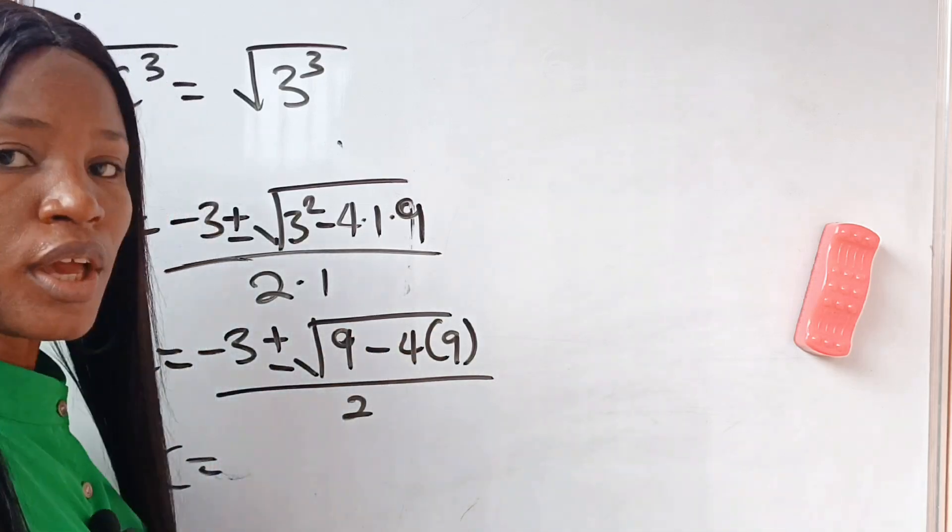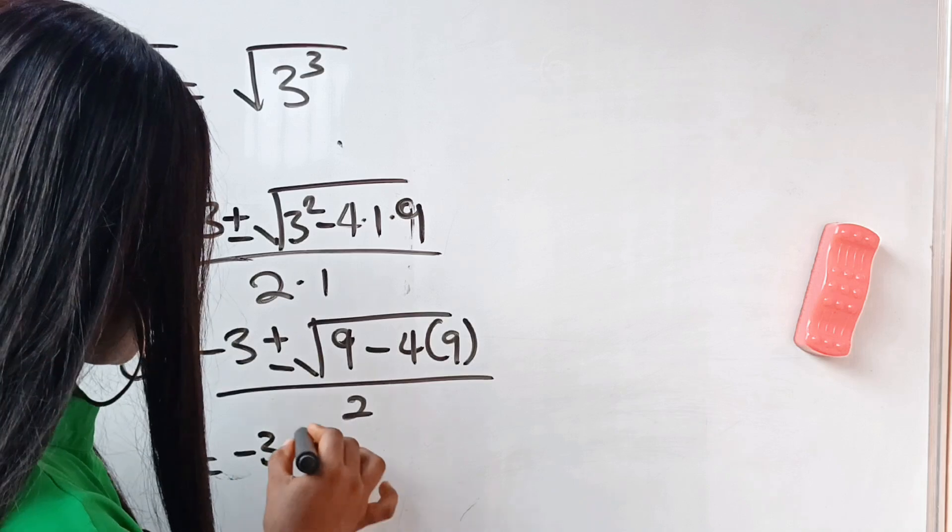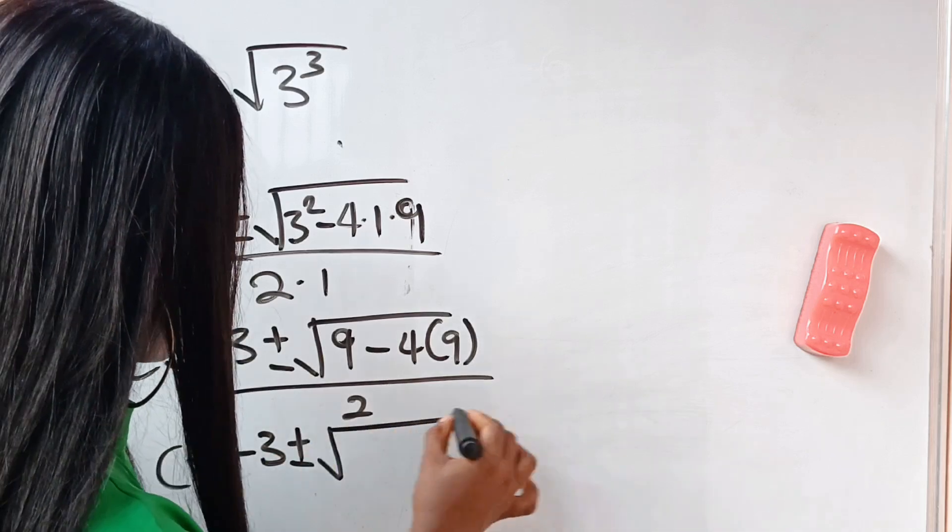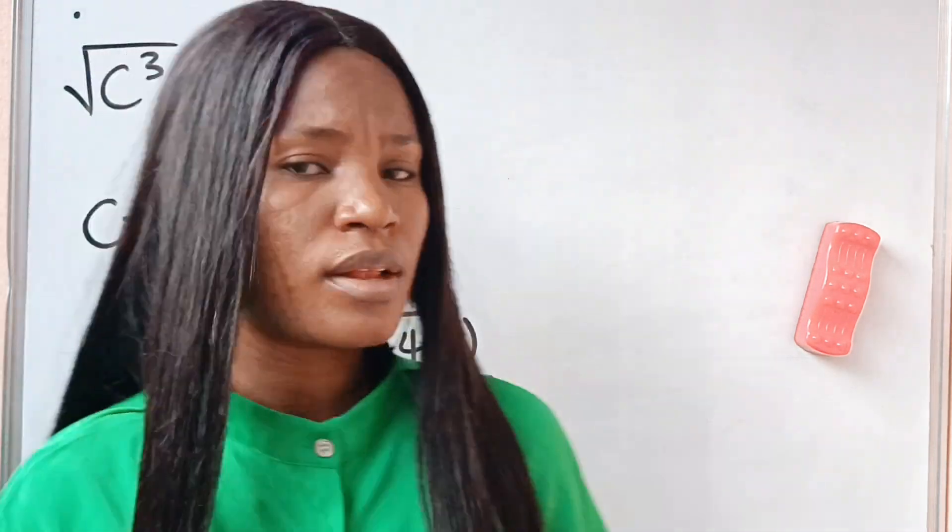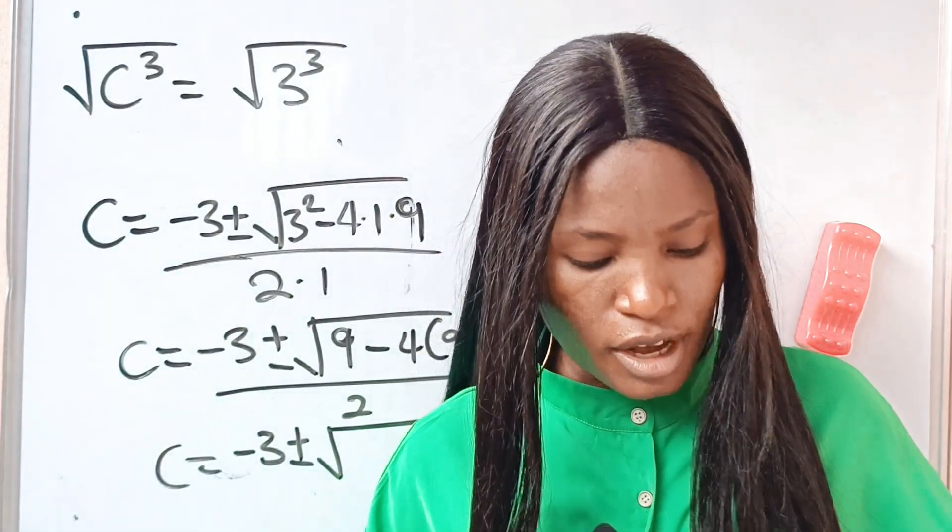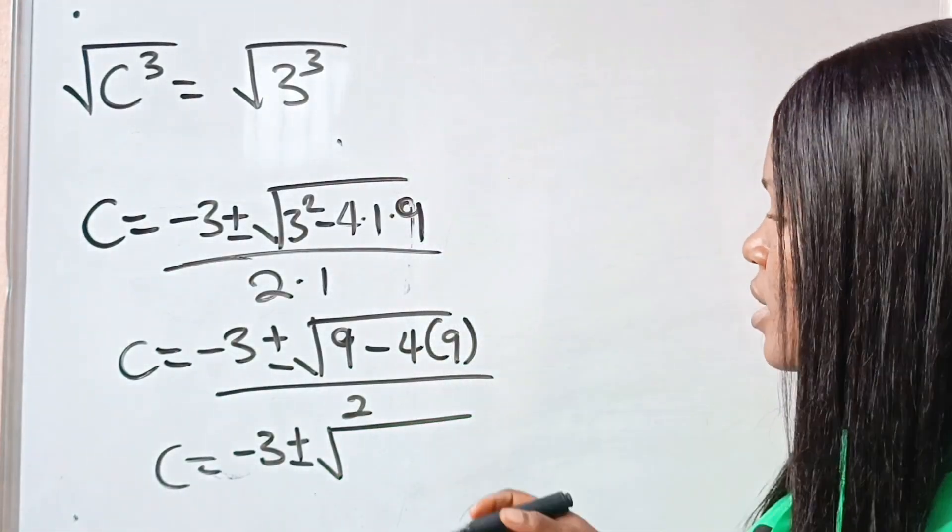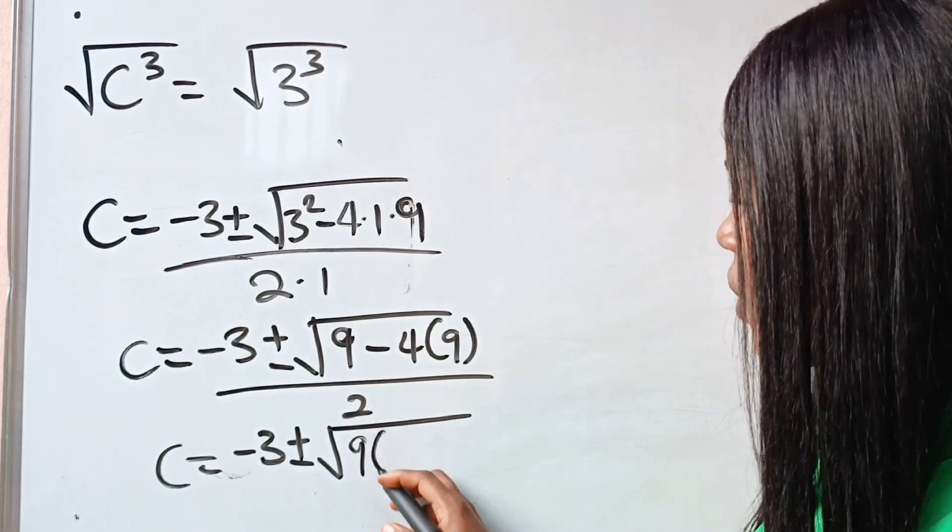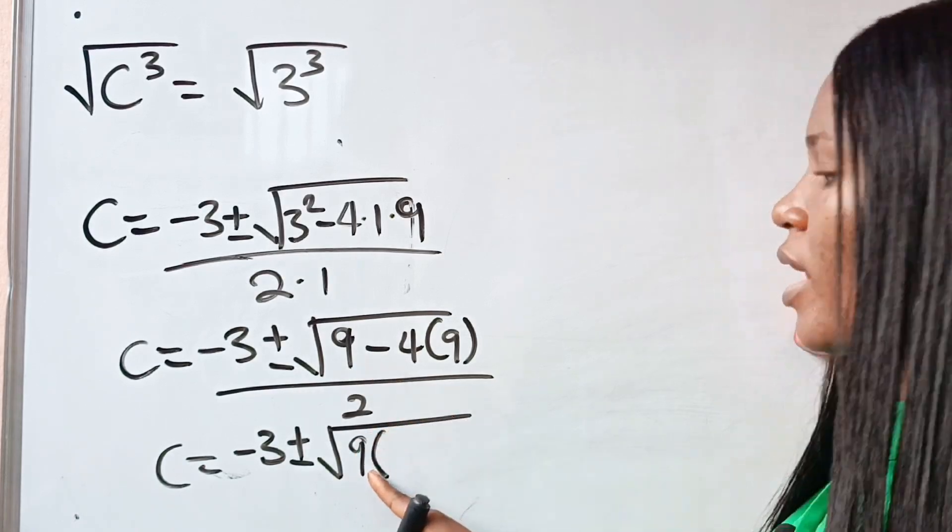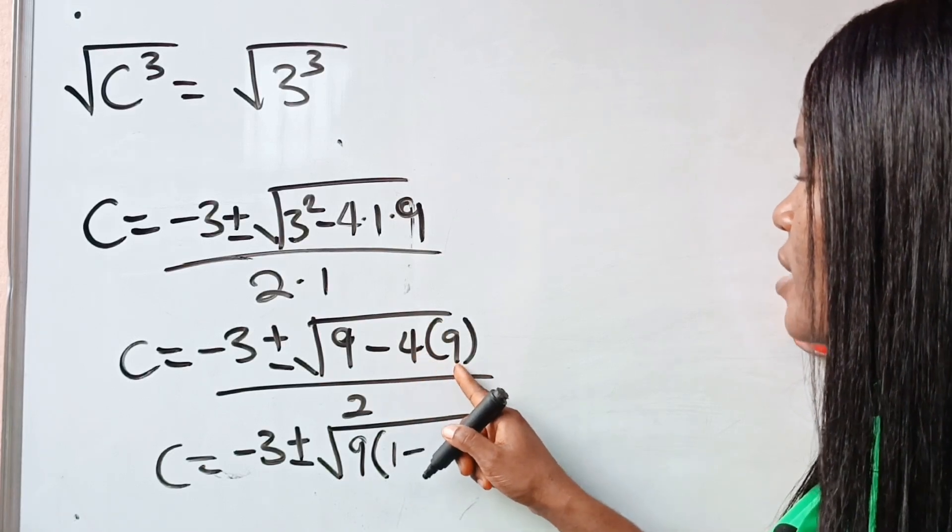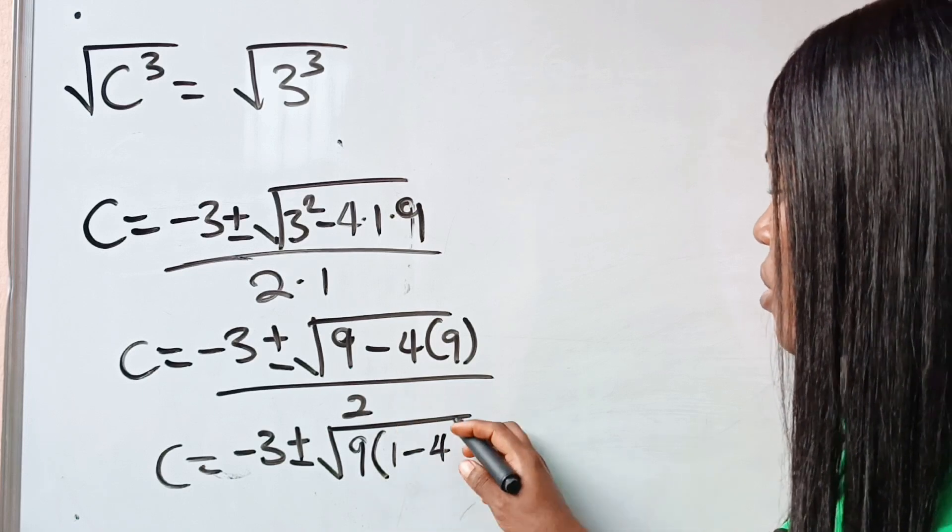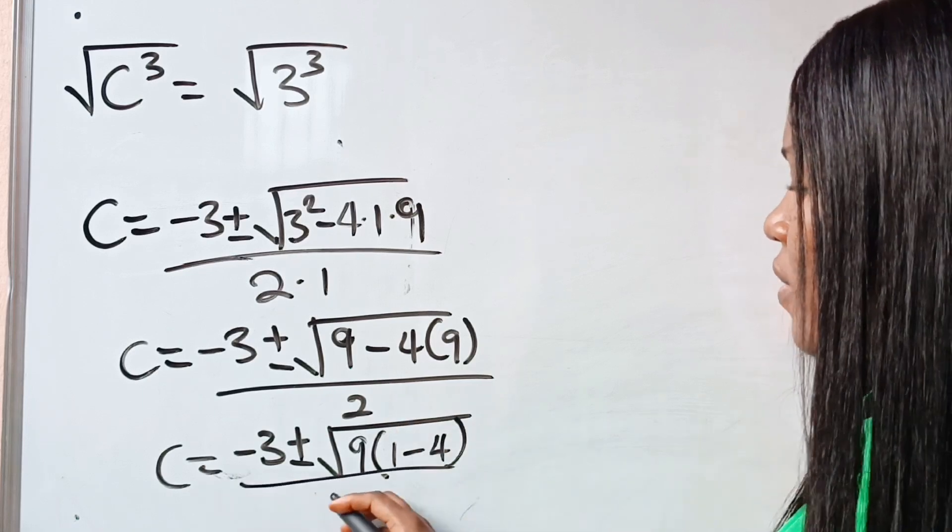So we have c to be equal to minus 3 plus or minus square root of, now they share 9 as a common factor. Let me stand here. They share 9 as a common factor. That means that we have 9. Now when 9 is divided by 9, we have 1 minus. When 4 times 9 is divided by 9, we have 4 remaining. Then everything divided by 2.